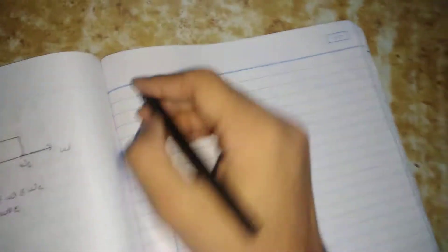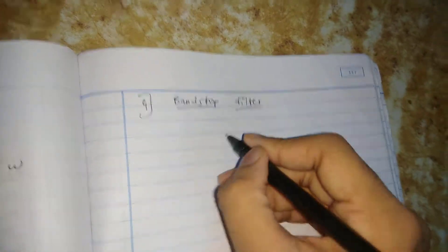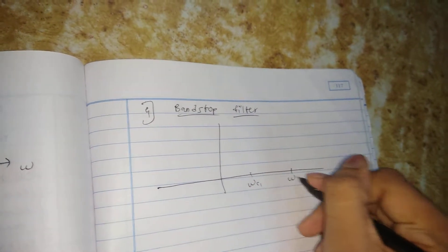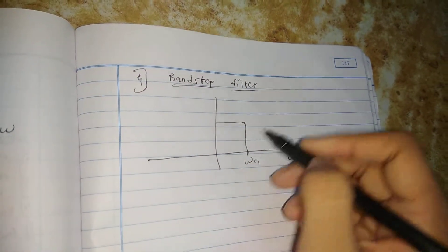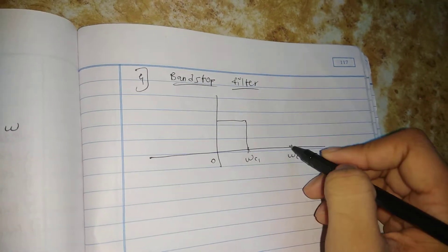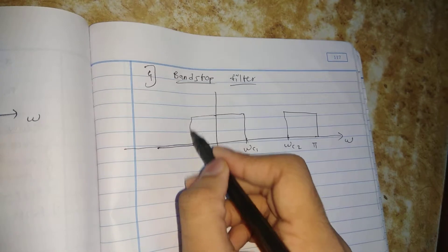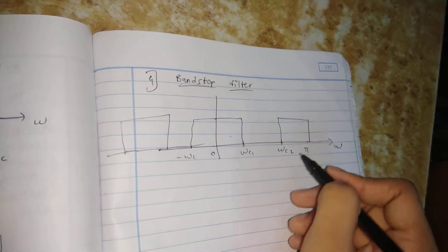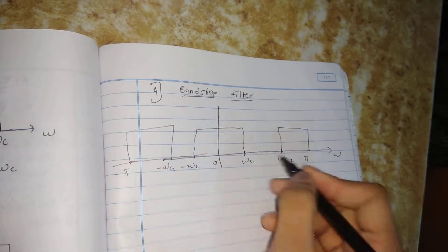After band pass filter, we have the last filter design — that is the band stop filter design. In band stop filter design, you again make a graph. Here we have omega C1, here we have omega C2. The band stop filter graph goes from 0 to omega C1, then stops, then resumes from omega C2 to pi. Draw the mirror image: minus omega C1 and minus omega C2, with minus pi at the dead end.